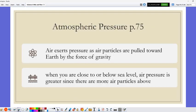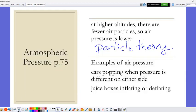Atmospheric pressure is caused by all the air particles being pulled towards the Earth by the force of gravity. If you're down low at sea level, the air pressure is higher. And if you're up on top of a mountain, there's less air particles above you pushing down, so the air pressure is lower. At higher altitudes, there are fewer air particles, so the pressure is lower.